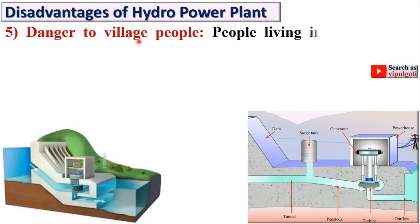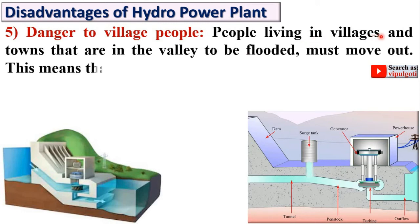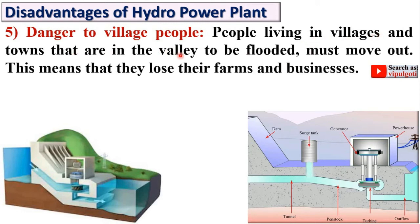Next: Danger to village people. People living in villages and towns in the valley to be flooded must move out, meaning they lose their farms and businesses.